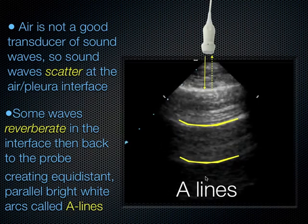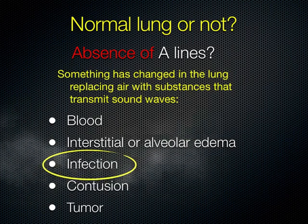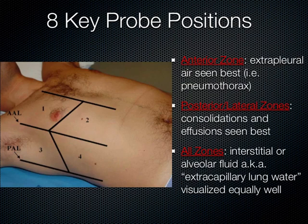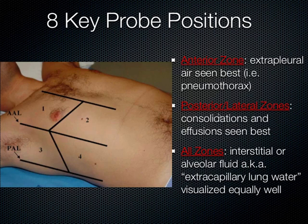What we're talking about right now is infection or pneumonia. When you lose those A-lines — when there's absence of A-lines — something has changed in the lung that replaces the air with some kind of substance, whether fluid or infection, that can transmit sound waves. The eight probe positions place the transducer to assess for lung pathology — four on one side of the chest repeated on the other side. If we're looking for consolidations from pneumonia, it's really these posterior lateral zones. The anterior zone is where pneumothorax is better seen, so these posterior lateral zones are focused on looking for consolidations.